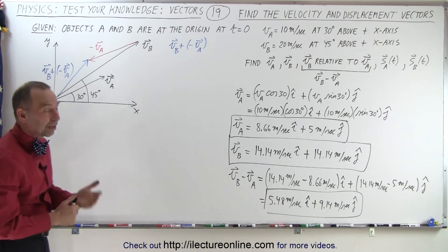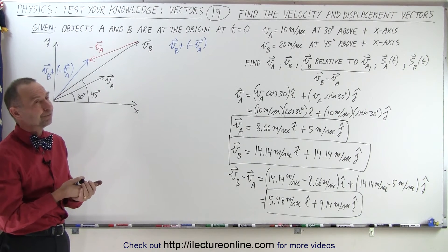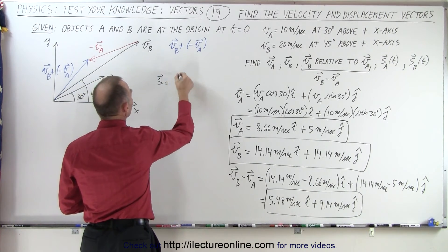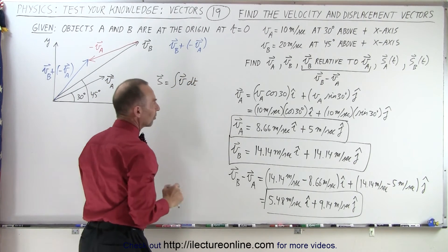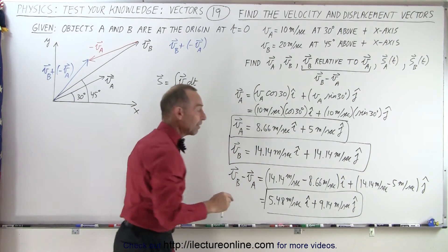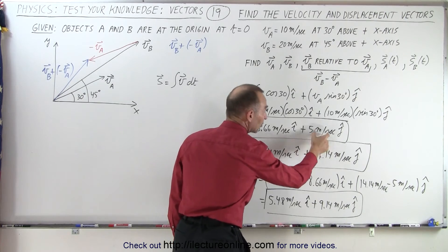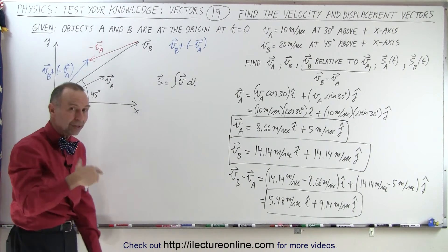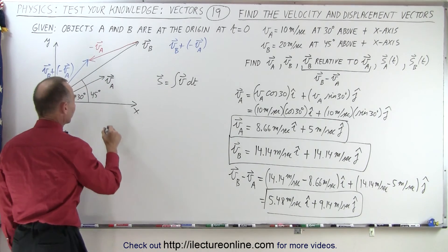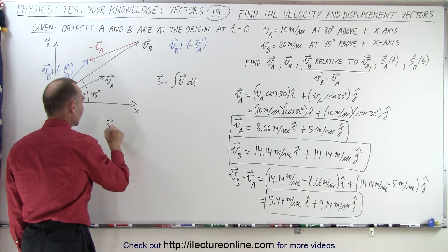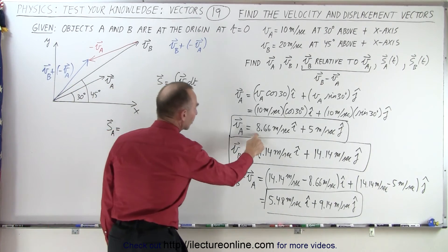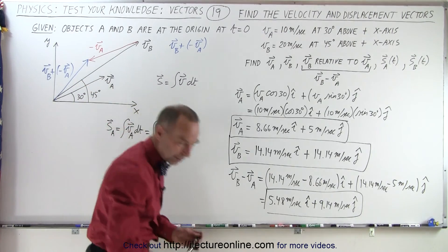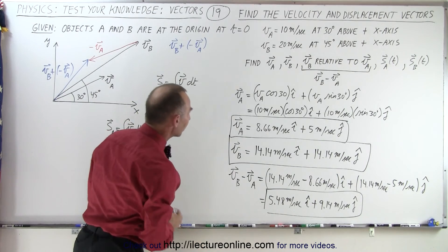Now we need to find the displacement vectors. The position vector S equals the integral of the velocity vector dT. Since we have constants in the i and j directions, integrating simply adds a factor of T. Because the objects start at the origin at time zero, there is no constant of integration.